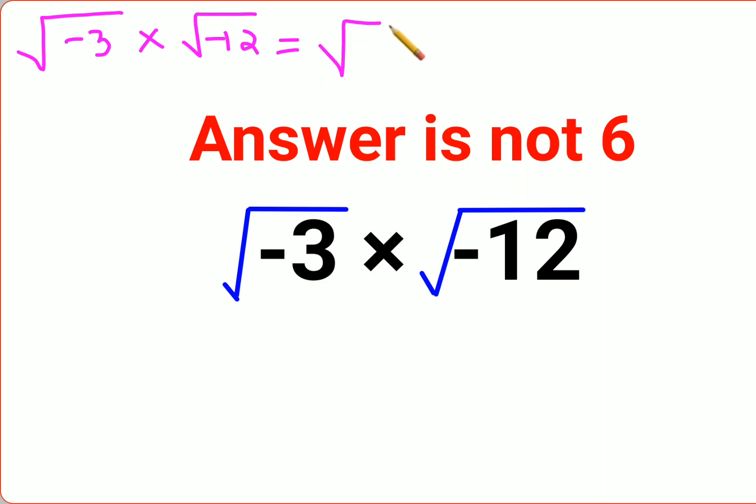Since there is a root, a lot of people do it this way: -3 times -12, everything under one root. And negative times negative is positive. So you get positive 36, and that gets you the answer as 6. Now this entire thing is absolutely incorrect.